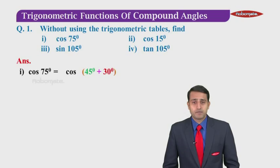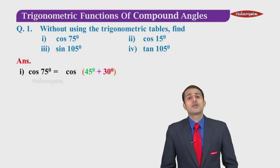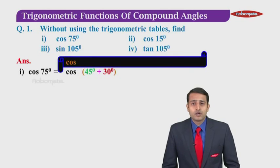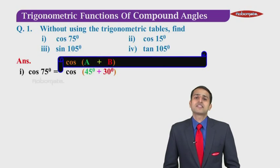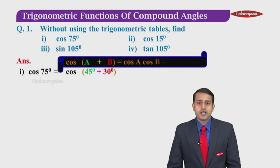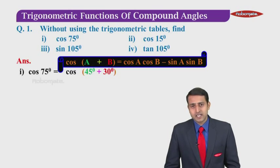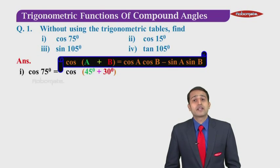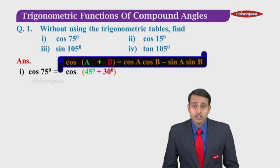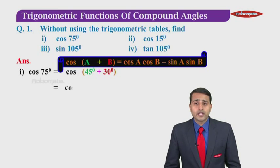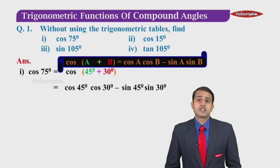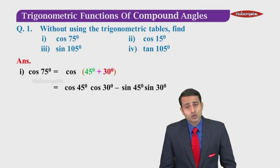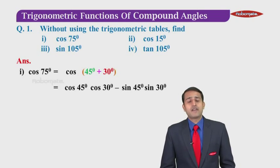So we get cos(45°+30°). This is in the form of cos(A+B) where A is 45° and B is 30°. The formula is cos A cos B minus sin A sin B. Substituting in place of A we write 45° and in place of B we write 30°. So in the next step we get cos 45° · cos 30° minus sin 45° · sin 30°. We need to know the values of cos 45°, cos 30°, sin 45°, and sin 30°.